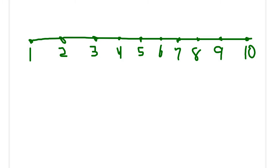So with a number line, we see that all of our numbers line up, and I could create a range of numbers. And let's say our range is from 1 to 6. That means that every number between 1 and 6 are part of our range. So 1 and 2, 3, 4, 5, and 6 are included.